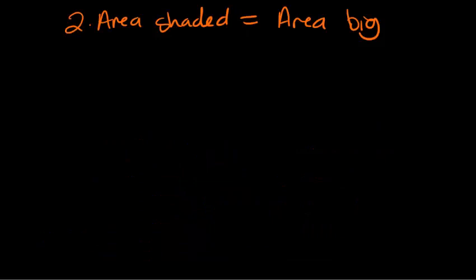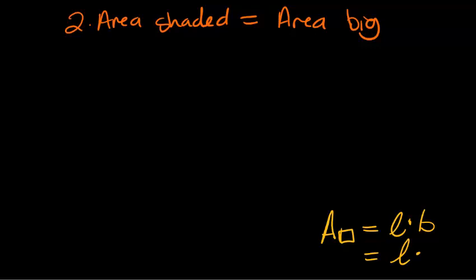What I know about squares is that the area of a square is length times breadth, because it is a rectangle. And then in a square specifically, length times length, because breadth and length are equal to each other. So the area of a square is actually length squared.